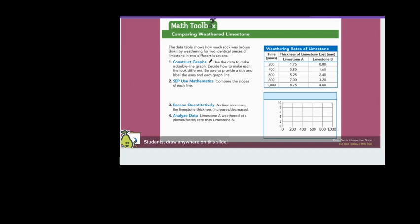The data table shows how much rock was broken down by weathering for two identical pieces of limestone in two different locations. Number one, construct graphs. Use the data to make a double line graph. Decide how to make each line look different. Be sure to provide a title and label the axes and each graph line.